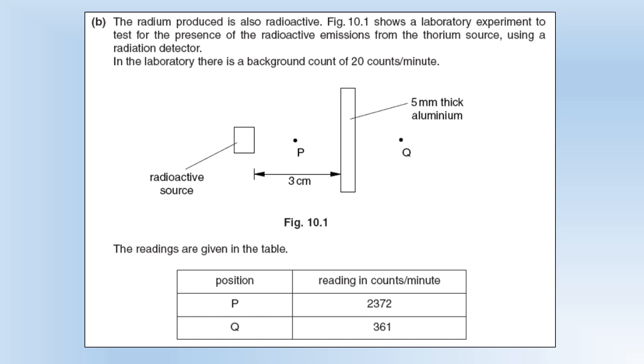Radium is produced and is also radioactive. We've got a lab experiment to test for the presence of the radioactive emissions from the thorium source using a radiation detector. In the laboratory there's a background count of 20 counts per minute. We can see position P which is 1.5 centimeters from the source - we've got quite a large count rate. At Q we also have a fairly decent count rate even though it's gone through five millimeters of aluminum.